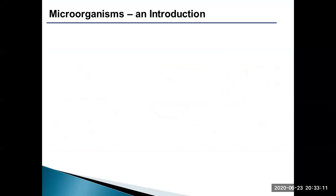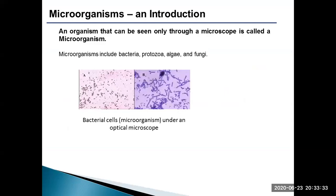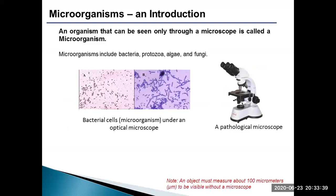Living species which can only be observed under a microscope are called microorganisms. A wide range of microorganisms exist on this planet, which includes bacteria, protozoa, algae and fungi. Here is an example of bacterial cells which can be seen under a microscope. Any object smaller than 100 micrometers is visible only under a microscope. Hence, an optical or an electron microscope is required to study microorganisms.